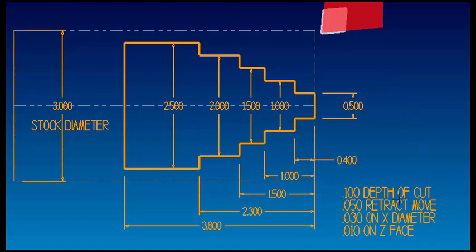So for this example we're going to be taking 100 thousandths depth of cut per pass. We're going to retract 50 thousandths at the end of each pass before it starts a new pass. And we're going to leave 30 thousandths on the diameter and 10 thousandths on the face in Z.